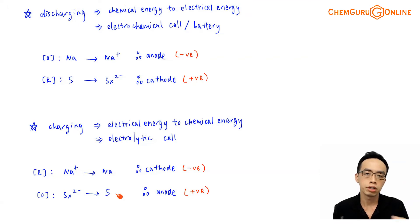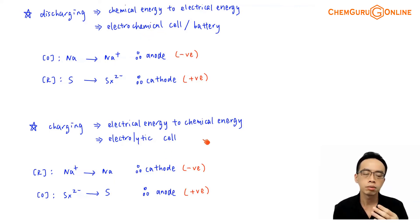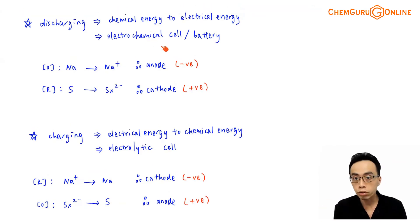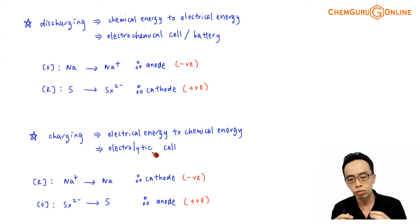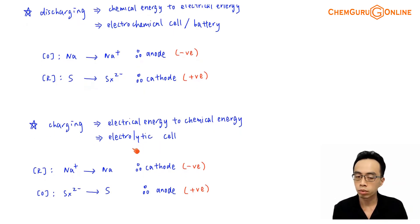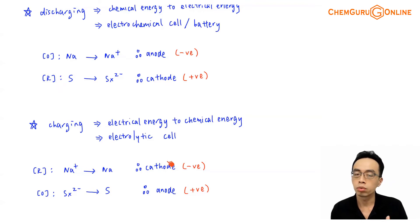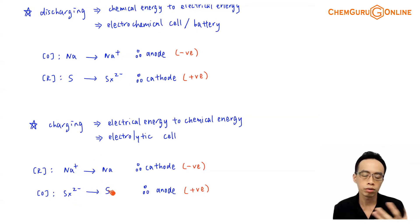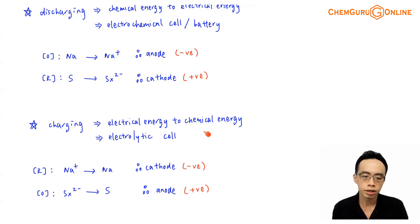An electrochemical cell converts chemical energy to electrical energy; an electrolytic cell converts electrical energy to chemical energy — they are direct opposites. During charging, we want Na+ to go back to Na, which is reduction, so the electrode at the sodium side becomes the cathode. Involving sulfur, we want SX2- to be oxidized back to sulfur, so the electrode in direct contact with sulfur will be the anode. For an electrolytic cell, the cathode is negatively charged and the anode is positively charged.